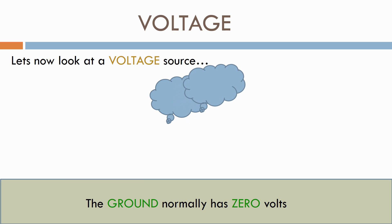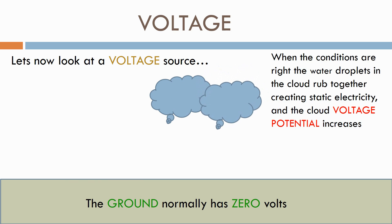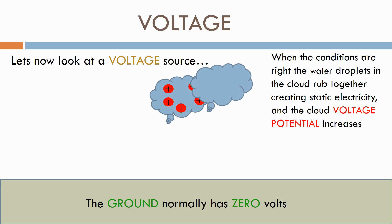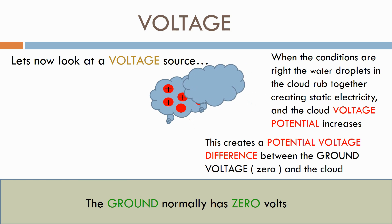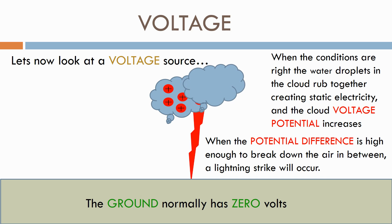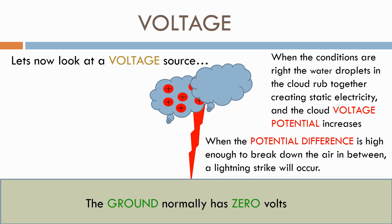Let's look at some clouds in the sky. When the conditions are right, the water droplets in the cloud rub together, creating static electricity, and the cloud voltage potential increases. This creates a potential voltage difference between the ground voltage, which is zero, and the cloud. When a potential difference is high enough to break down the air in between, a lightning strike will occur.